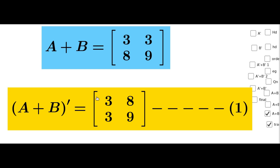Therefore A plus B whole transpose equals matrix 3, 8, 3, 9. That is equation 1.